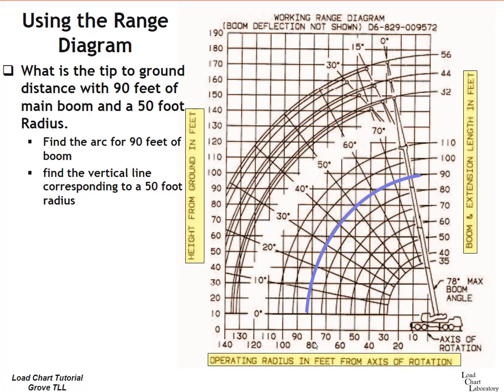Find the vertical line corresponding to a 50-foot radius. We have all of our radius values along this lower axis. There's 50 feet. So let's go ahead and create a line there to illustrate what we're doing. We've got the 90-foot boom arc, the 50-foot radius vertical line. Those two line segments intersect.